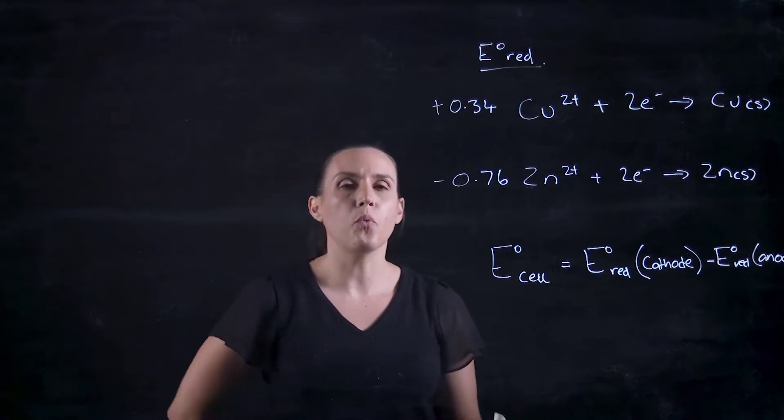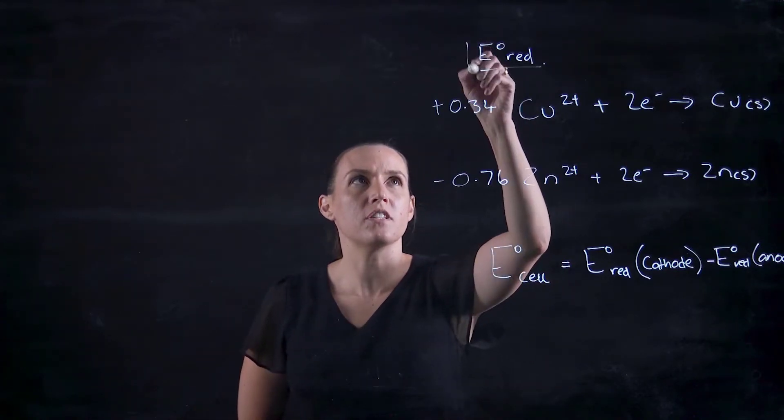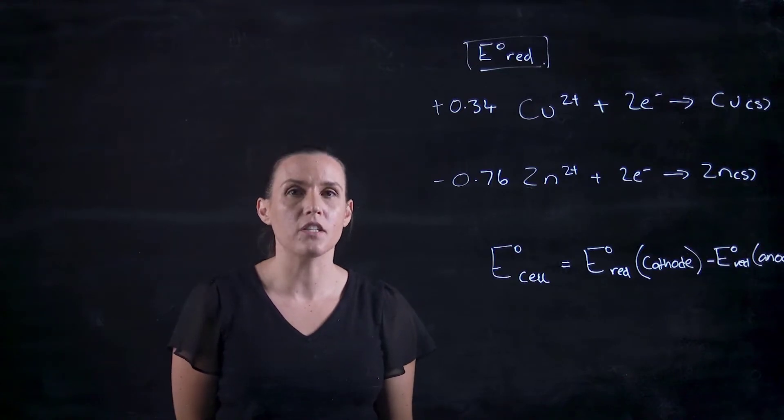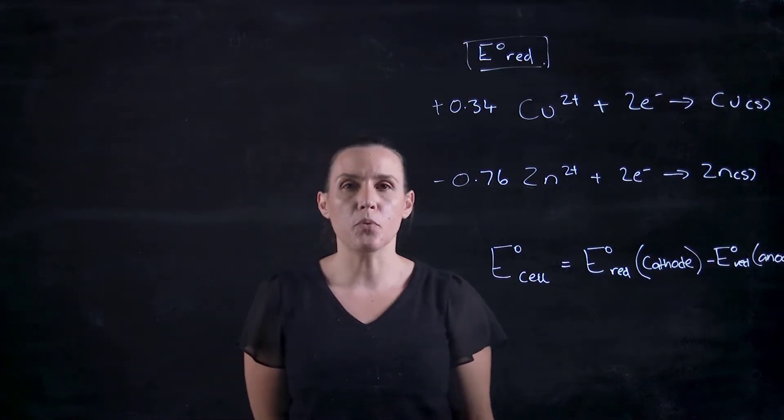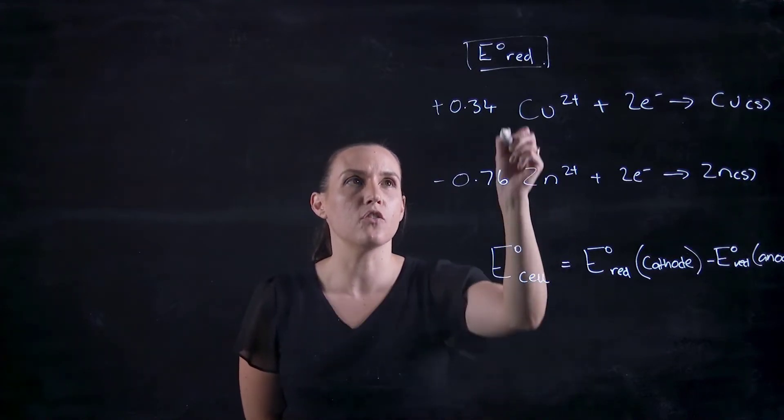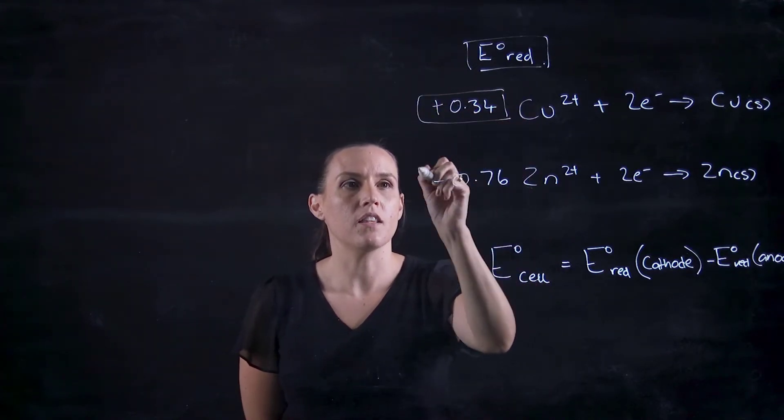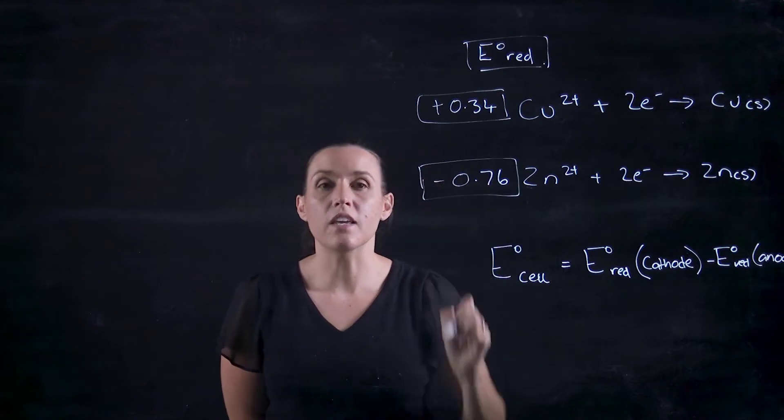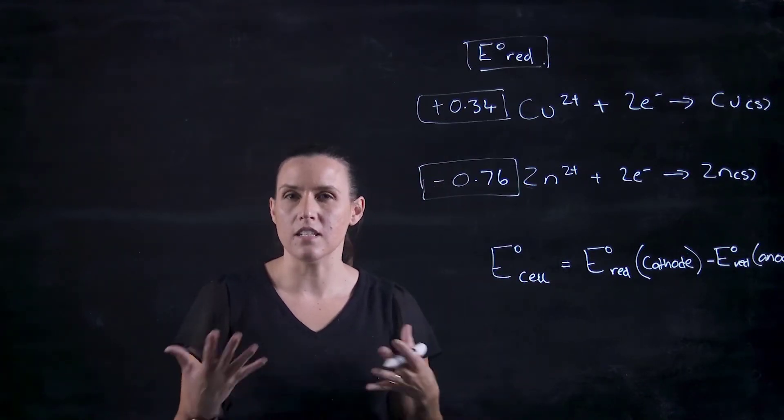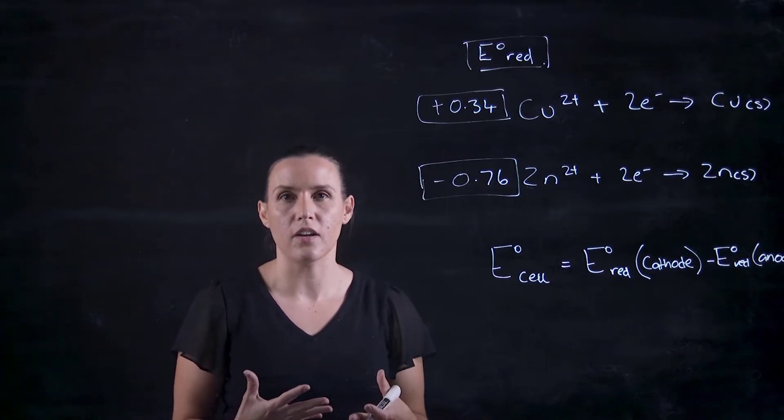When we get this information, we're looking at the reduction potential for these individual half equations. When we put them together, we don't need to change them in any way. We can just look up the value from the charts or the information that you're given, or there will be an appendix in the textbook that will have these values.